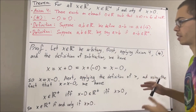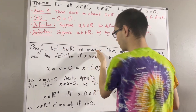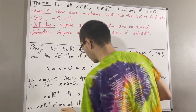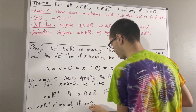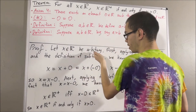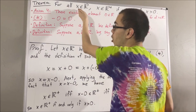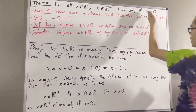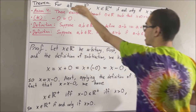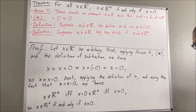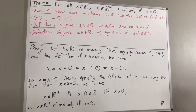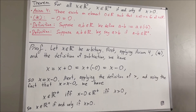So what we have shown here is, for an arbitrary real number x, we have x is a positive real number if and only if x is greater than 0. Since x was arbitrary, this means we have shown for all real numbers x, x is a positive real number if and only if x is greater than 0. And that is exactly what we wanted to prove. So this completes the proof.